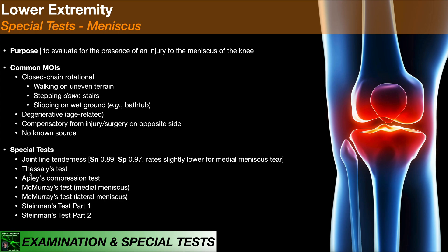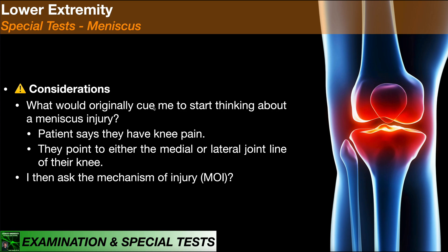The special tests for a meniscus tear are: Thessaly's test, Apley's compression test, McMurray's test for the medial meniscus, a corresponding McMurray's test for the lateral meniscus, and Steinman's test parts one and two. What would cue me to think about a meniscus injury? The patient comes in with knee pain pointing to the medial or lateral joint line — that joint line tenderness steers you down this path. You also want to find out their mechanism of injury, and nine times out of ten there's going to be a closed chain rotational injury, in which case you should definitely test for meniscus injury.